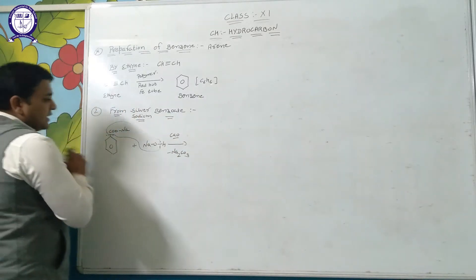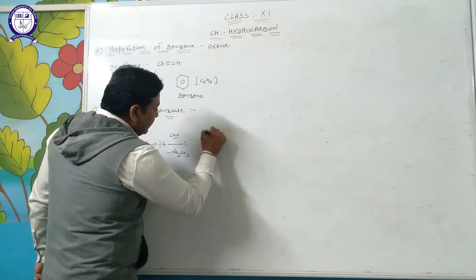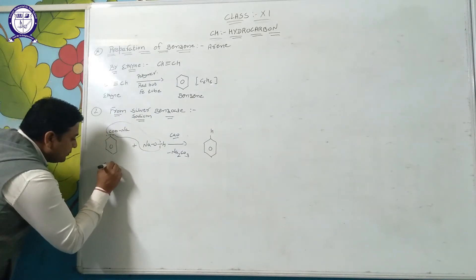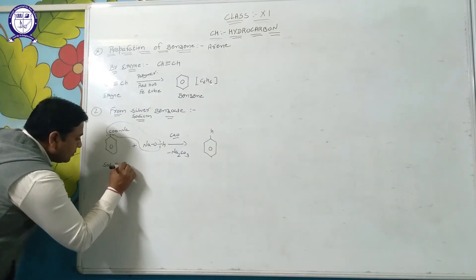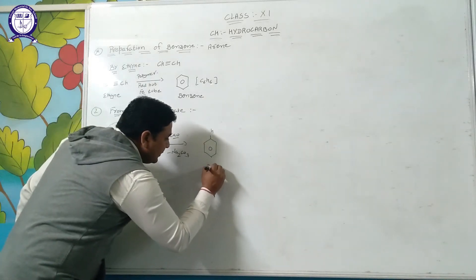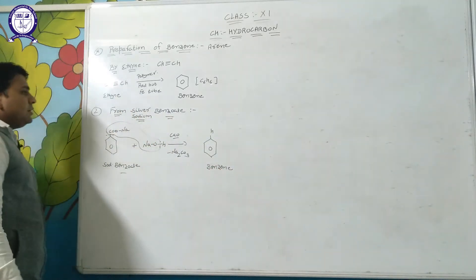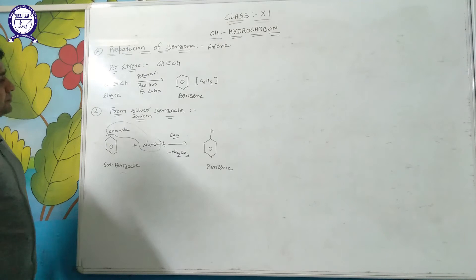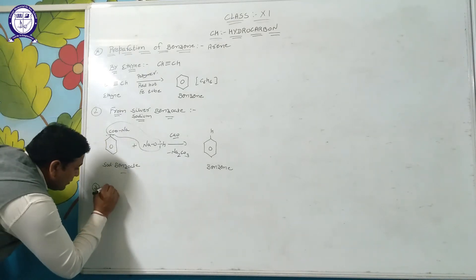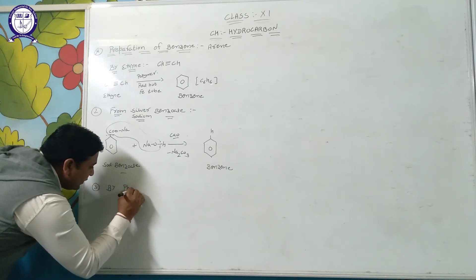A hydrogen attacks the corner carbon atom, converting sodium benzoate to benzene. This reaction is known as decarboxylation.